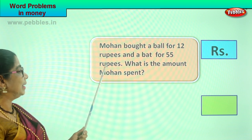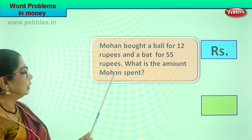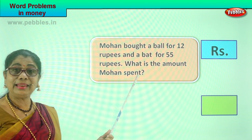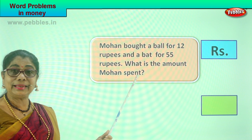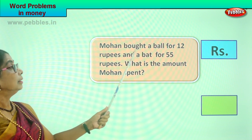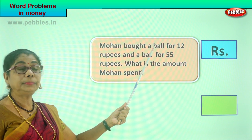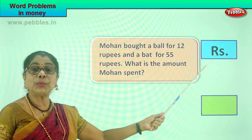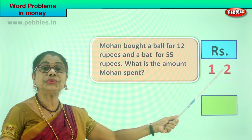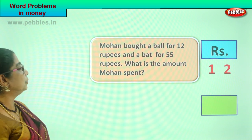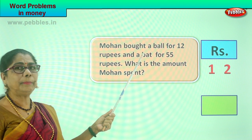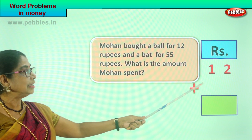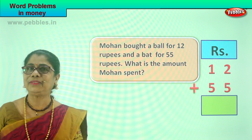Let's look at the question: what is the amount Mohan spent? He has to ask daddy for the amount spent. Now, what is the cost of a ball? Rupees 12. So we write it here — 12 rupees. What is the cost of a bat? It's 55 rupees. So we write plus 55. So we have the ones place and the tens place.